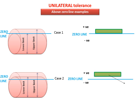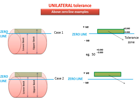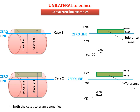Unilateral Tolerance above zero line example: here you can see the Tolerance Zone is above the zero line and touching the zero line. For basic size 50, upper deviation is 40 microns, which is shown in the Tolerance Zone. In Case 2, the Tolerance Zone is also above the zero line but not touching the zero line. In both cases, the Tolerance Zone lies above the zero line, meaning positive deviation.